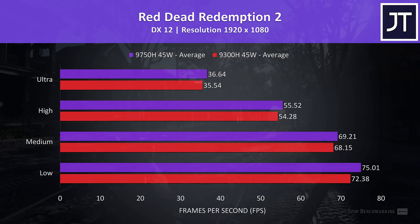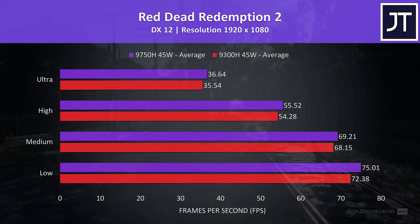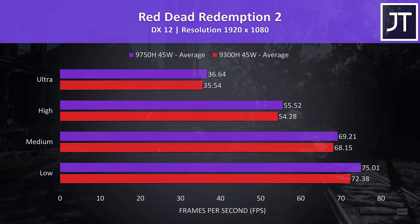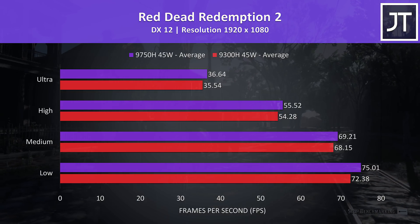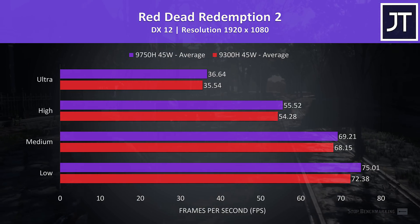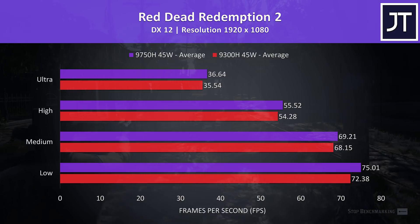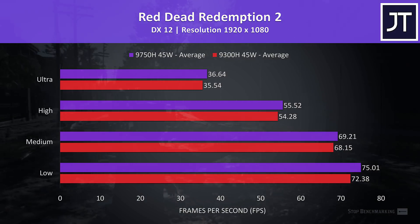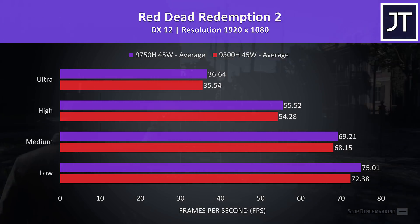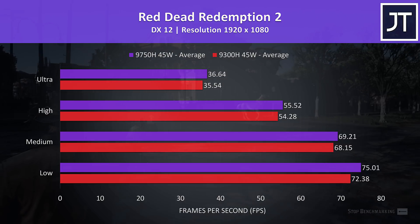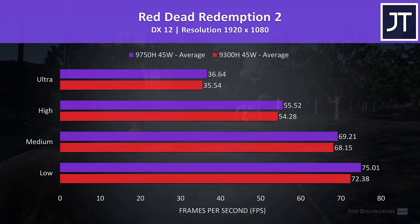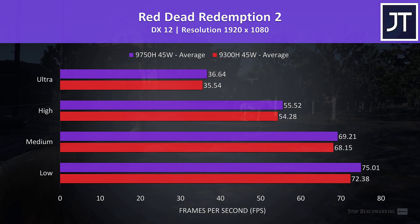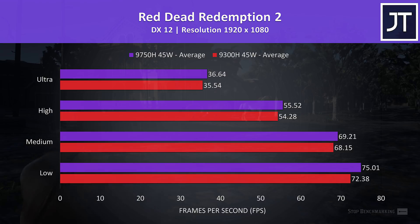Red Dead Redemption 2 was tested with the game's built-in benchmark tool. I've got the i5-9300H shown by the red bar on the bottom, and the i7-9750H shown by the purple bar on top, and I've tested all setting levels noted on the left. In this test the i7 was just 3% faster in average FPS at ultra settings, and about the same at low too.